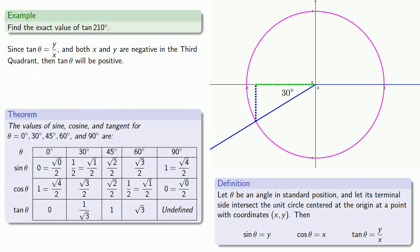Our reference angle of 30 degrees has a tangent of 1 over square root 3. And so the tangent of 210 degrees will be the positive version of that number, 1 over square root 3.